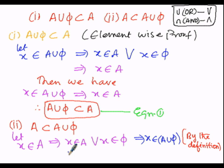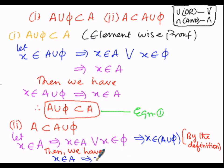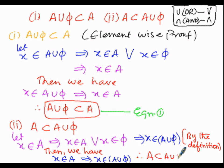So X belongs to A implies X belongs to A union φ. The element X present in set A is also present in A union φ — the elements of set A are also elements of A union φ. Therefore set A is a subset of A union φ. Let us consider this as equation number 2.